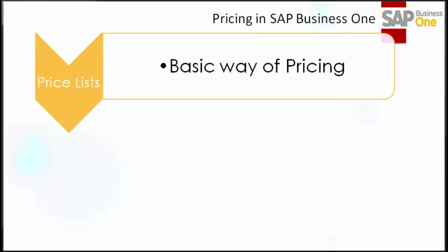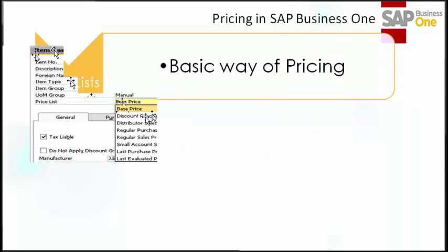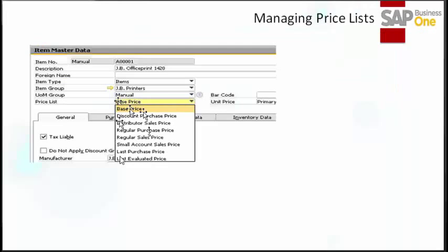Let us start with the basic way of pricing. Managing multiple price lists allows you to provide flexibility in pricing. For example, you may want to offer customers who make regular purchases or purchase large quantities a lower price than customers who only make occasional or small purchases. At the item master level, you can see the price list. There are a couple of price lists already defined. Every item in your system is automatically linked to every price list defined within the system. You can set an indicator in general settings that removes items without prices from the price list.